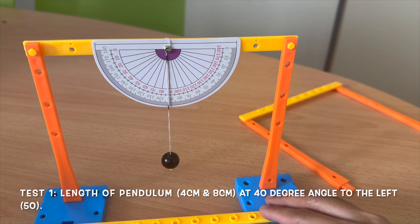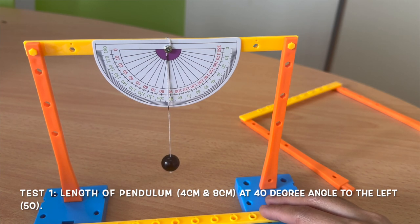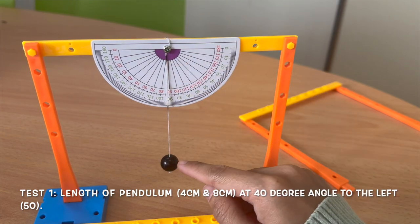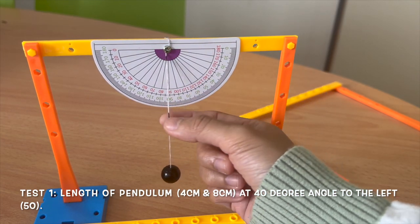The first one is to compare the length of pendulum. We have 8cm and also 4cm that we already mark in black.